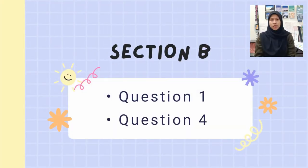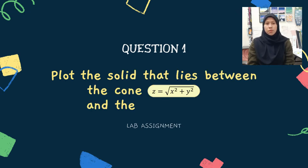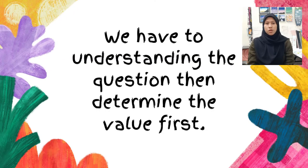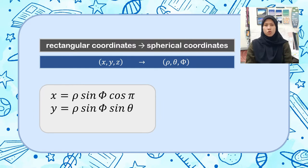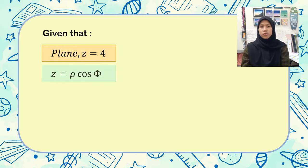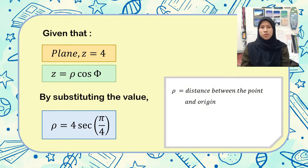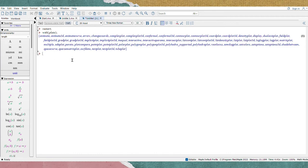Without wasting time, let's go to Section B. In this section, I choose Question 1 and Question 4. Question 1 asks us to plot the solid that lies between the cone Z equal to X square plus Y square and the plane Z equal to 4. Before proceeding in Maple, we need to understand the question and determine the values first. We convert rectangular coordinates into spherical coordinates: X equal to ρ sin φ cos θ, Y equal to ρ sin φ sin θ, and Z equal to ρ cos φ. Hence we get φ equal to π over 4. Given the plane Z equal to 4, and Z equal to ρ cos φ, by substituting we get ρ equal to 4 secant π over 4. Here ρ is the distance between the point and the origin, θ is the longitude angle, and φ is the angle the position vector makes with the positive Z-axis. Since we have all the data needed, we can proceed with commands in Maple.